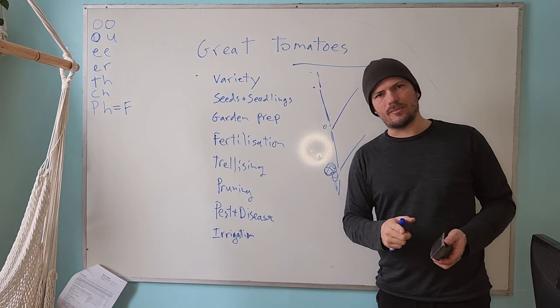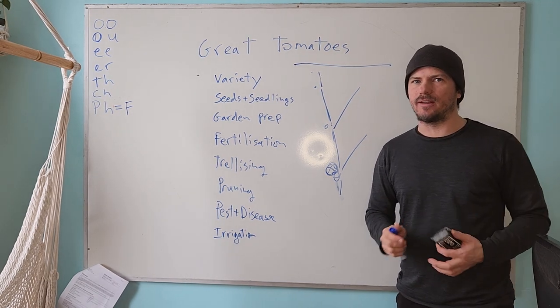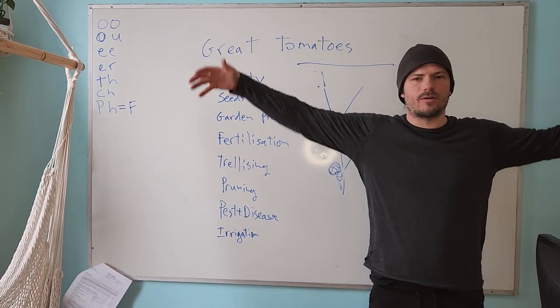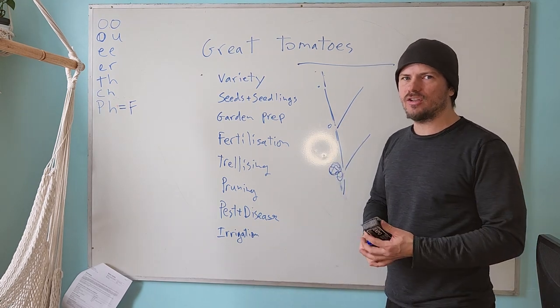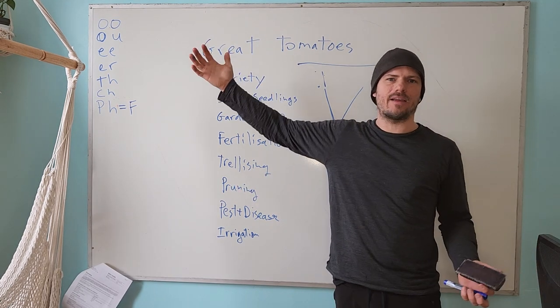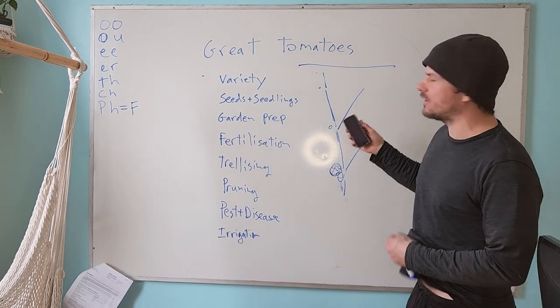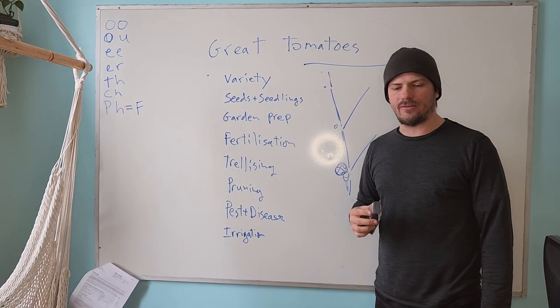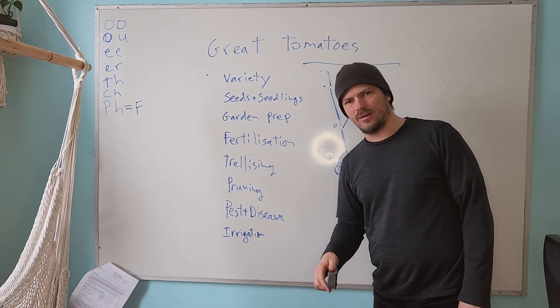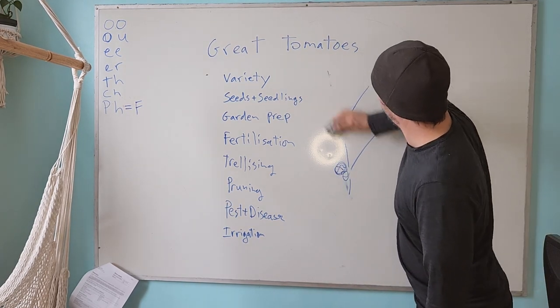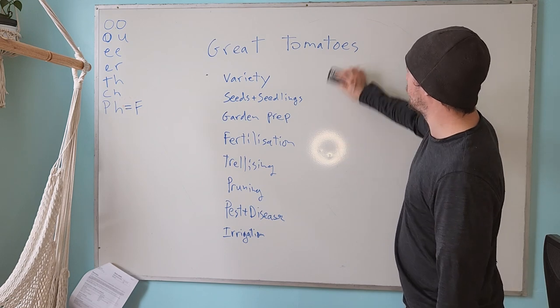But with an indeterminate tomato plant, you really need to think about trellising because these are plants that can grow to be dozens of feet long in the right conditions, or at least six to eight feet tall in a garden condition. So with an indeterminate tomato, you really have to be careful about that. Hey Milo, watch out. You're wiggling the camera.